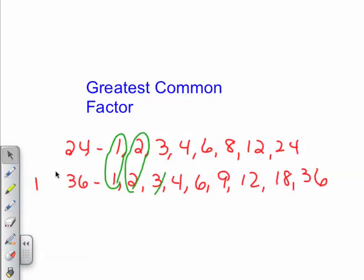2, 3, 4, 6, and 12. The greatest common factor, then, of these two numbers is 12.